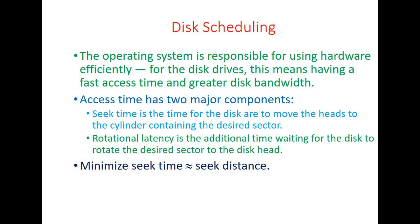The operating system is responsible for using disk hardware efficiently for the disk drives, meaning having fast access time and greater disk bandwidth. Access time has two components: seek time and rotational latency. Seek time is the time for the disk arm to move the heads to the cylinder containing the desired sector. Rotational latency is the additional time waiting for the disk to rotate the desired sector to the disk head. Minimizing seek time means minimizing seek distance.